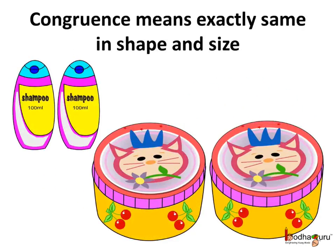So two items are said to be congruent when they are identical in every way, i.e., in shape as well as in size.